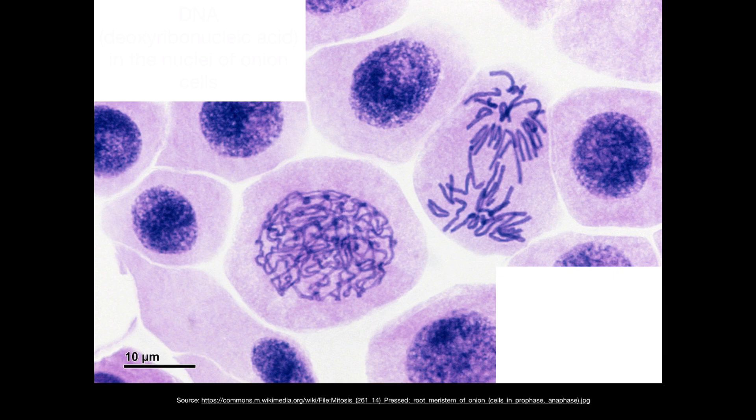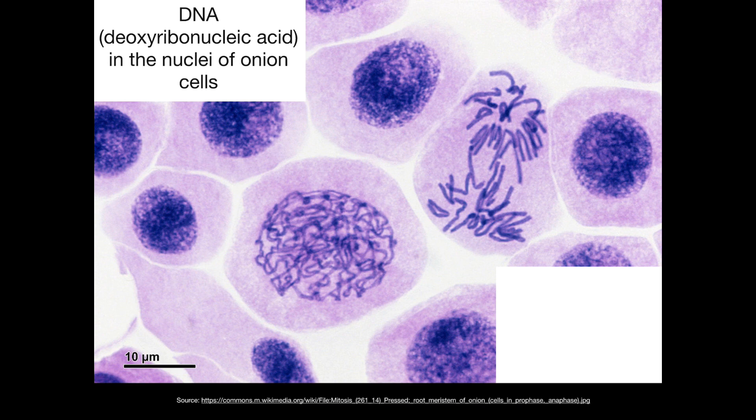DNA as genetic material essentially acts as a store of information. DNA stands for deoxyribonucleic acid, and nucleic acids were originally discovered in the nuclei of cells. You can see the DNA here in the nuclei of onion cells.